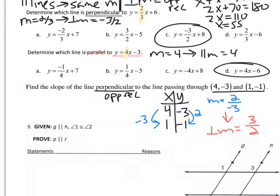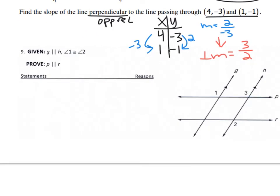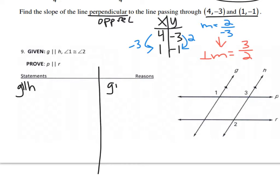The very last thing from unit 3 was doing proofs. Everyone loves proofs so much. But at least we know the first step is to always write your givens. So g is parallel to h, it's given. And angle 1 is congruent to angle 2, given.